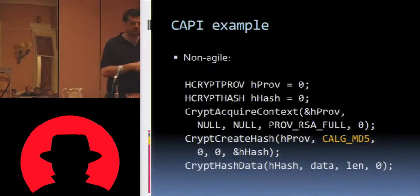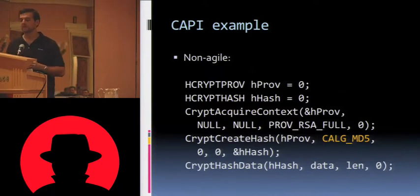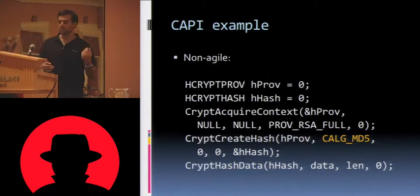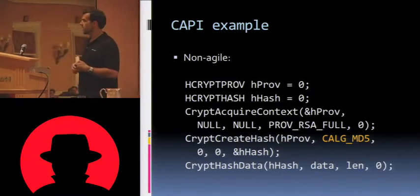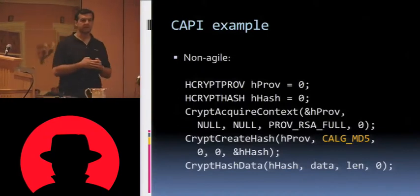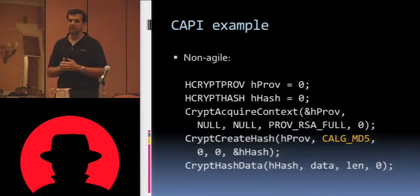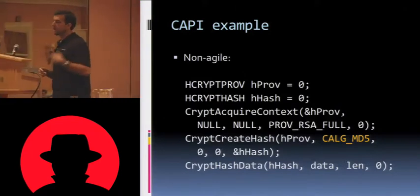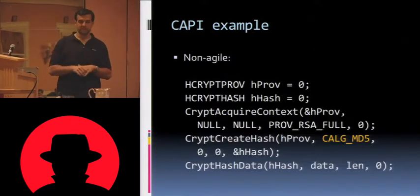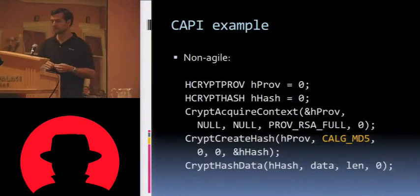So just like the other ones, we're going to look at agile and non-agile examples. In the non-agile CAPI example, you declare handles for the provider and for the hash, call CryptAcquireContext to acquire a handle to the provider, use that to create a hash object, then hash the data. In CryptCreateHash, we're asking for MD5 — specifically CALG_MD5, which is an integer defined in a header file in the crypto API. The problem is that when you have integers, if you want to write your own, you have potential collisions. Worse, you still have to get your provider signed by Microsoft — CAPI won't instantiate any provider that's not signed, which really limits your ability to extend the platform.